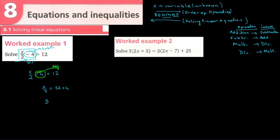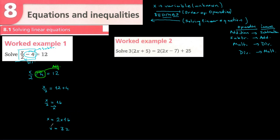So x/2 is equal to 16. The operation between x and 2 is division, and the inverse of division is multiplication. When we send the 2 to the other side, it becomes multiplication, so x equals 2 times 16.